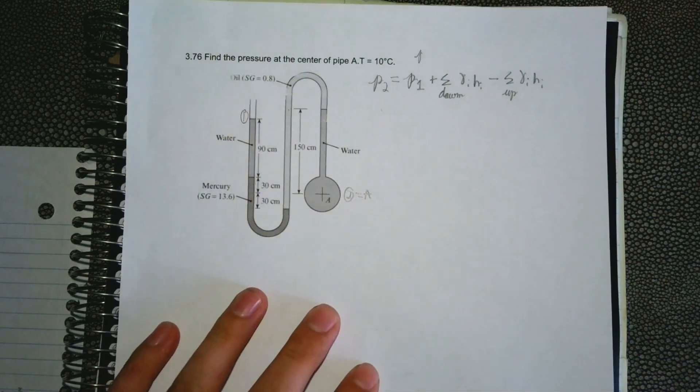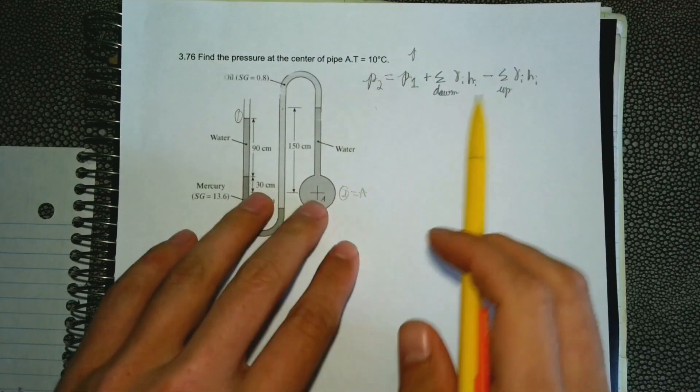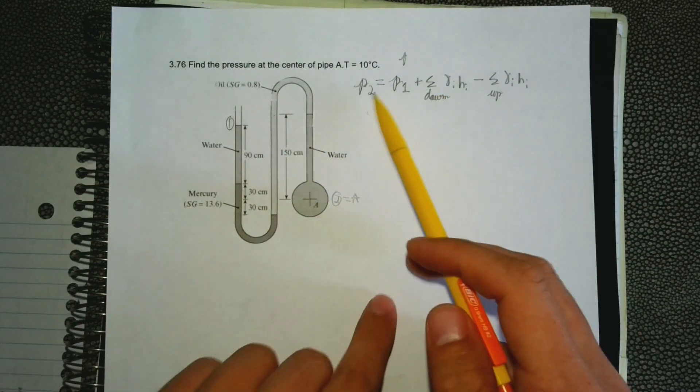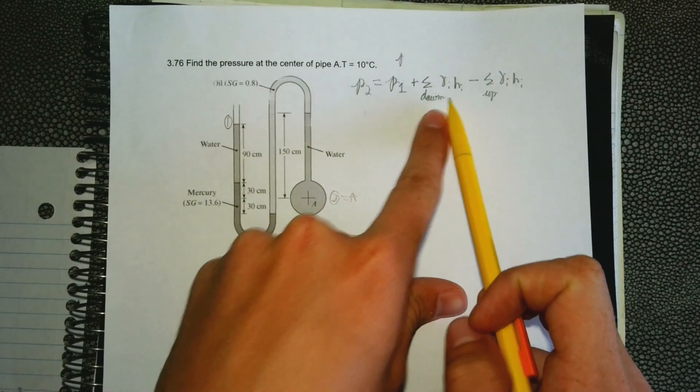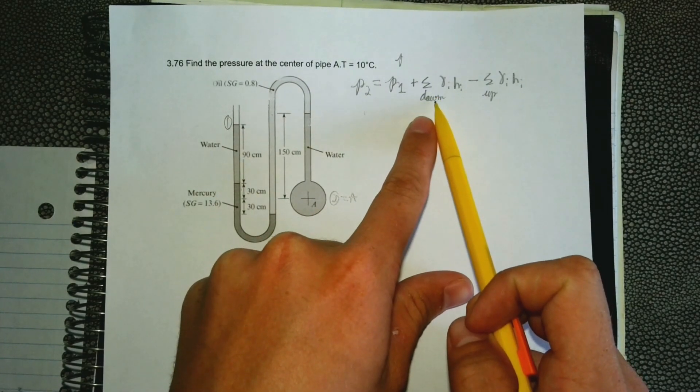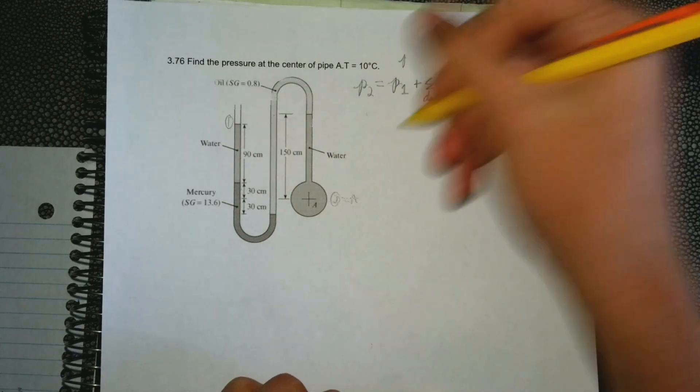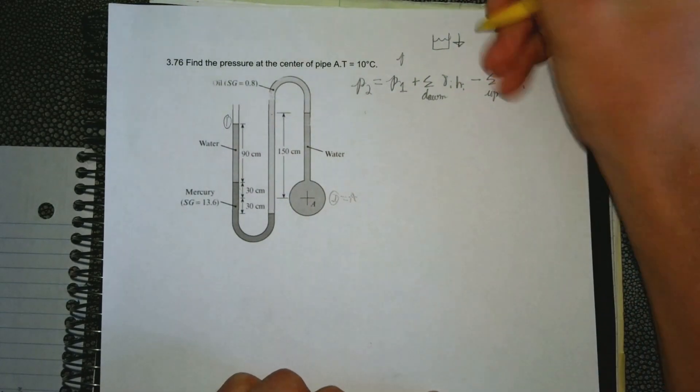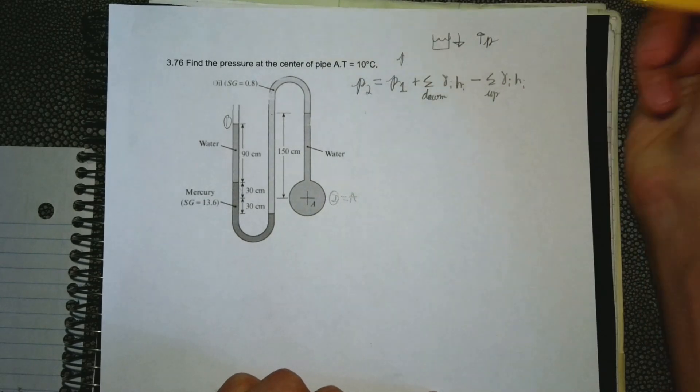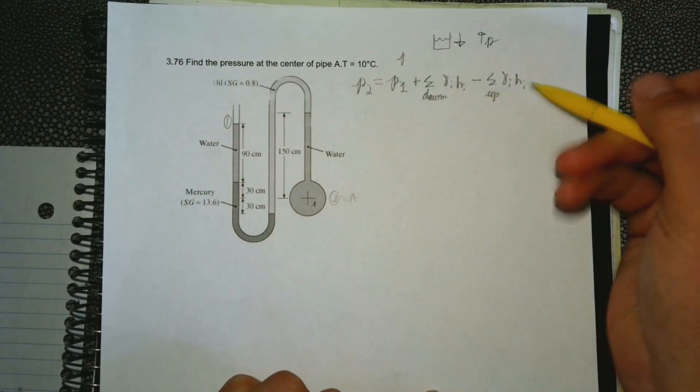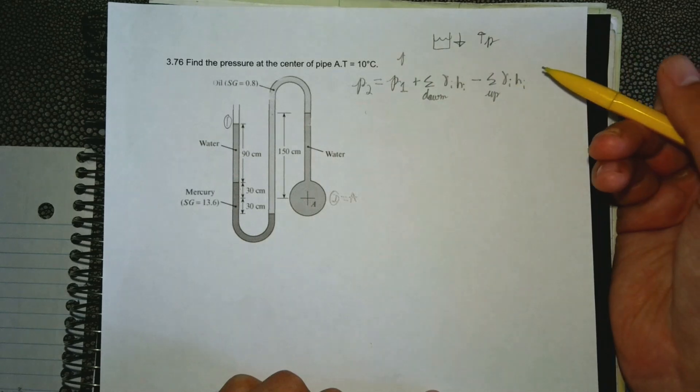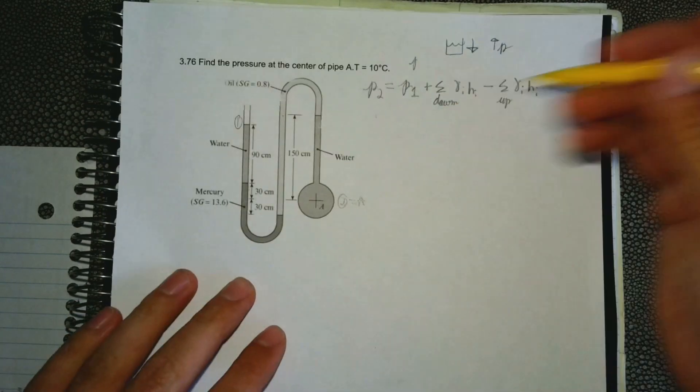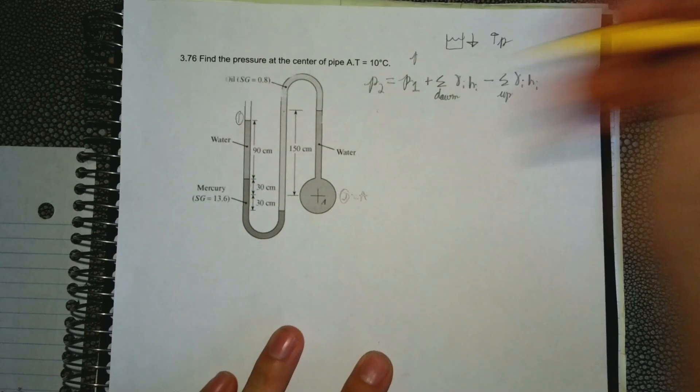Let's look at this equation real quick. It makes sense right? All we're doing is trying to find the pressure from here to here. It makes sense that you add when you go down because if you think about a little container of water, the farther you go down in that tank of water, the more pressure. That's why you add when you go down and then when you go up that's when you're subtracting because you're losing pressure.